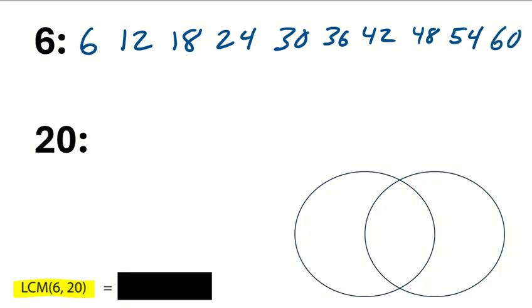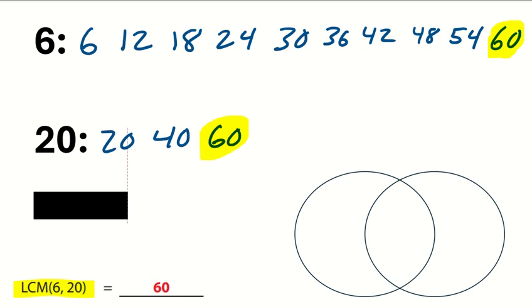Now, let's go ahead and skip count by 20s until we find a number that appears on both lists. 20, 40, and 60. And lookie there, we have a 60 here, we have a 60 there, and thus, the least common multiple is 60.